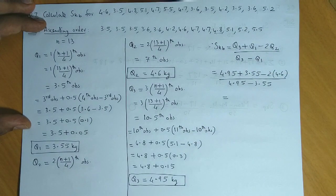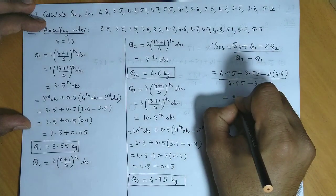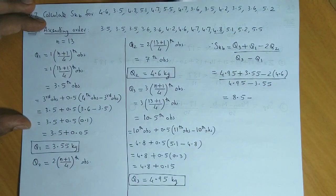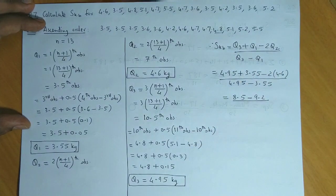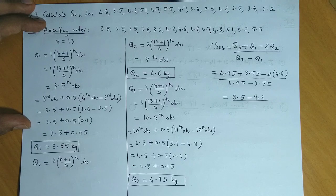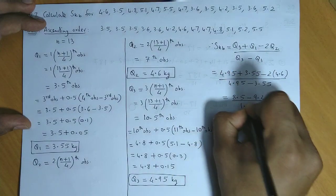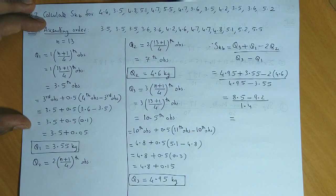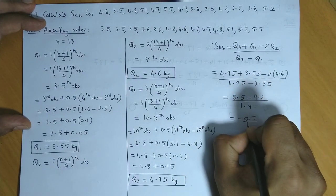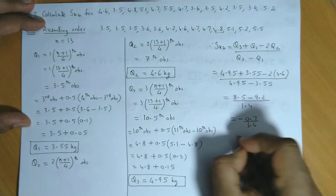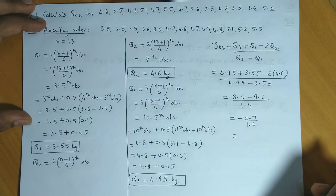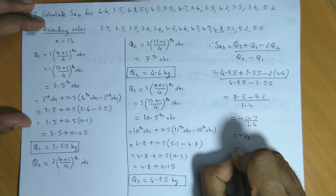We calculate: 4.95 plus 3.55 total 8.5 and 2 times 4.6 is 9.2 divided by 4.95 minus 3.55 is 1.4. If we subtract the numerator 8.5 minus 9.2 this difference is minus 0.7 and 1.4. If we divide these two, if we remove the decimal this will be 7 upon 14 which is half, so final answer is minus 1 by 2 or you could write it as minus 0.5.